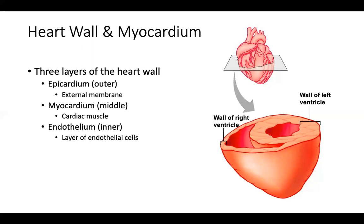The left ventricle has a much thicker wall because it must pump blood out to the entire systemic circulation — the head, limbs, abdomen, and brain — overcoming greater resistance and covering a much further distance. The right ventricle wall is substantially thinner because it only has to pump to the pulmonary circulation: into the pulmonary artery, out to both lungs, and right back to the left side of the heart. It's a shorter distance and less resistance is encountered in those larger pulmonary vessels.